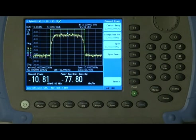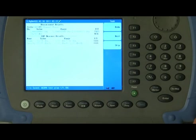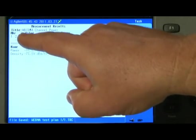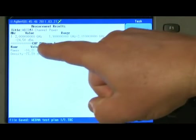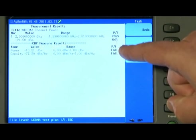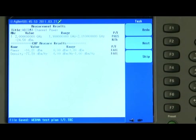The instrument is now making the first measurement which is WCDMA channel power. It's saving the screenshots and creating a text file with the test results. Here you can see the measurements it's making of the marker value, whether it pass or fail and here are the channel power measurement results again indicating pass or fail.